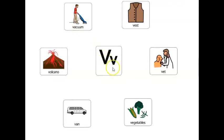Let's play a game. Which word that starts with the letter v is something you drive? Van. Which word that starts with the letter v is something you clean with? Vacuum. Which word that starts with the letter v is a doctor that helps animals? Vet. Which word that starts with the letter v shoots out lava? Volcano.